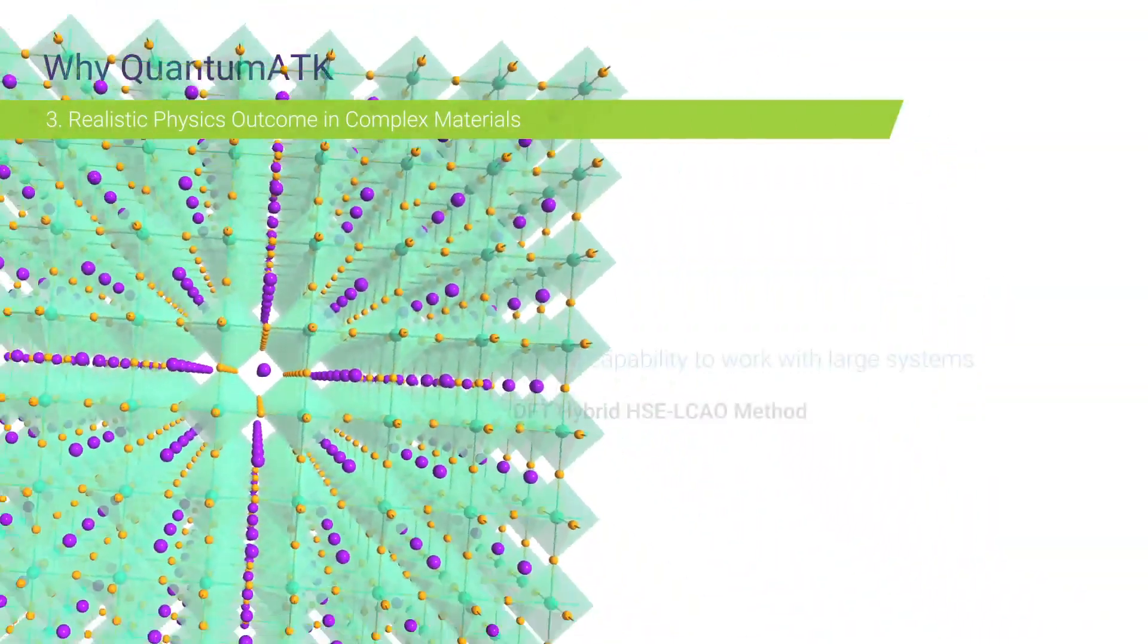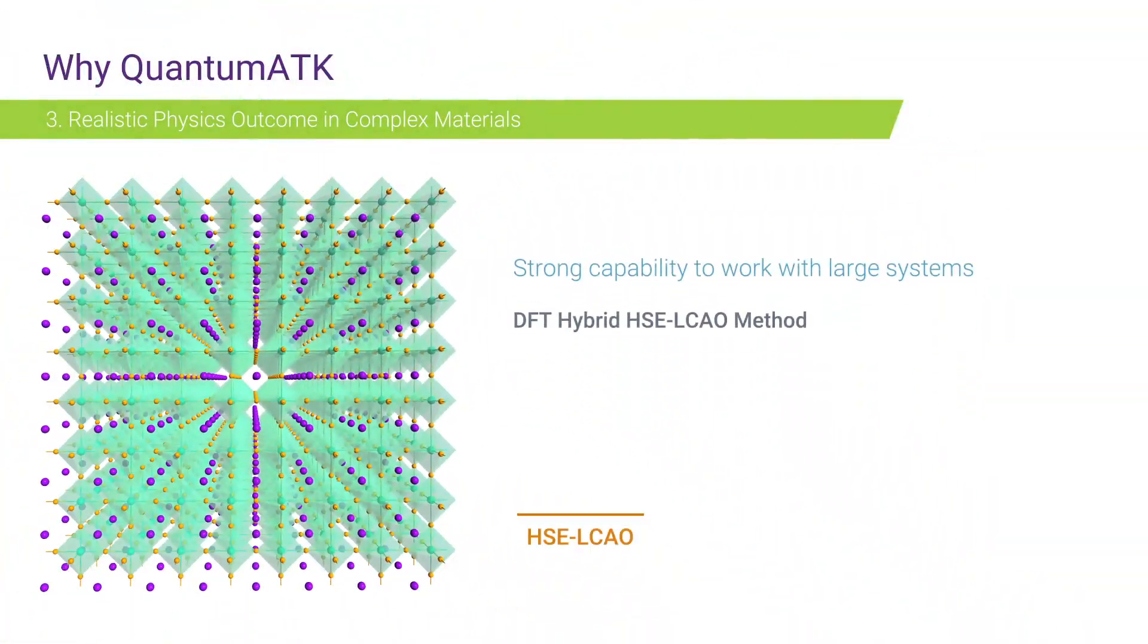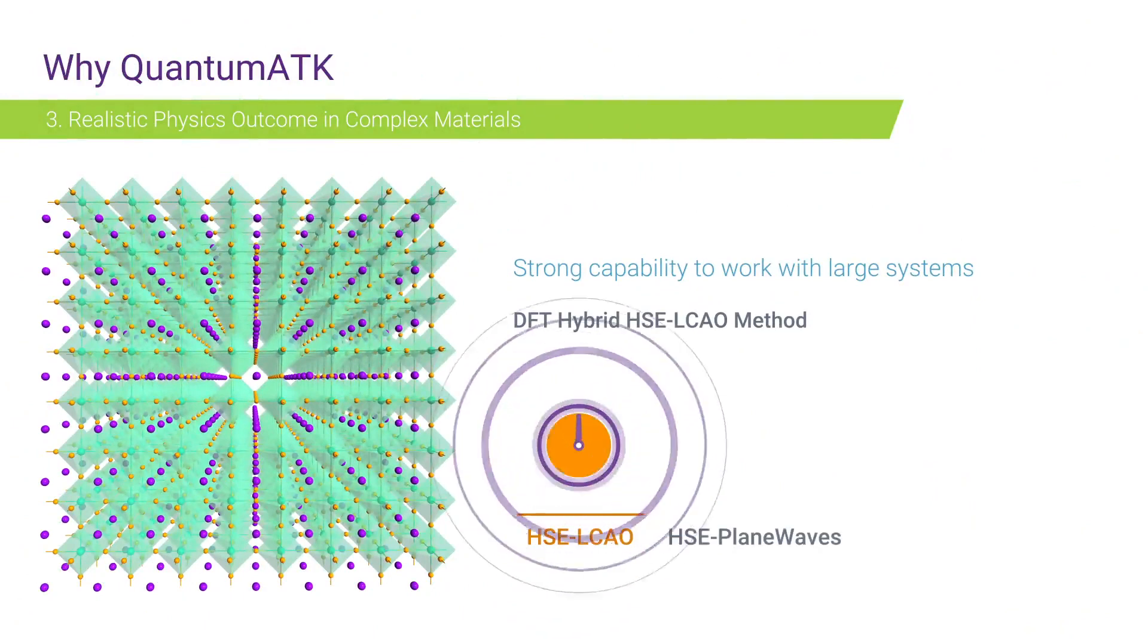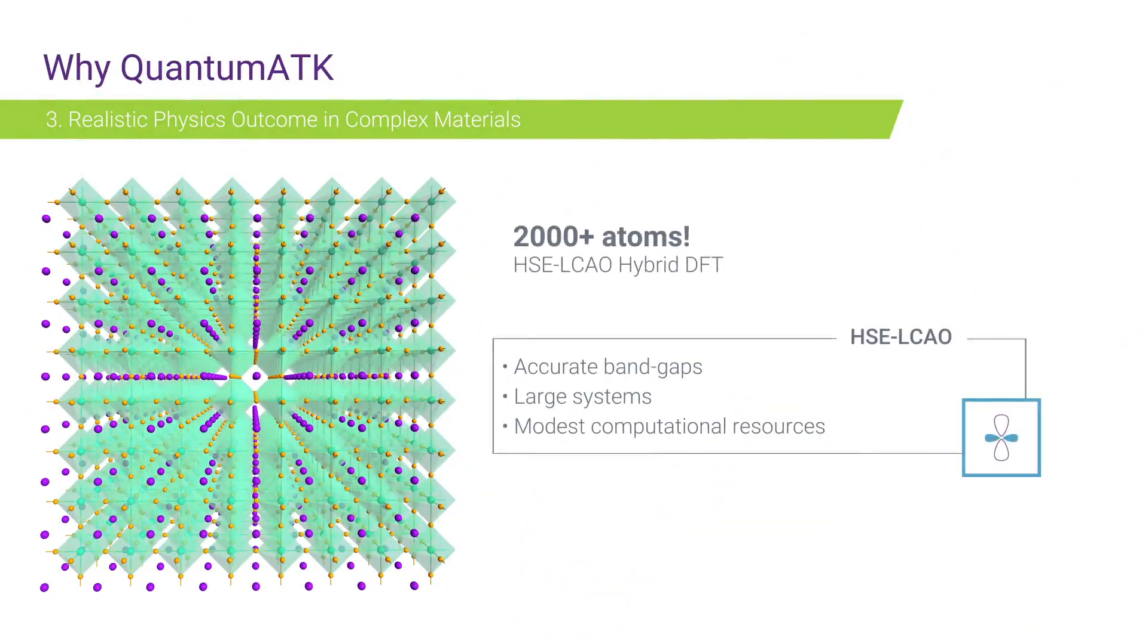Hybrid Functional Method HSE for LCAO is up to 100 times faster than Plain Wave HSE. It can be used to simulate large systems with 2000 plus atoms.